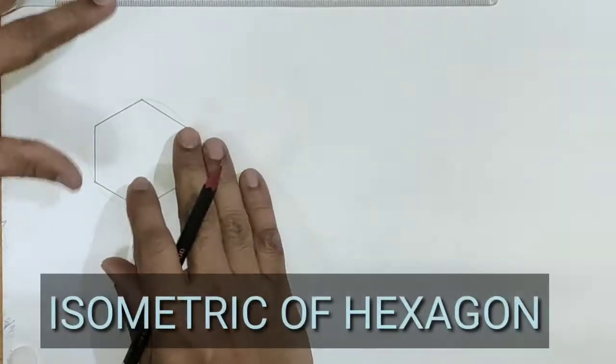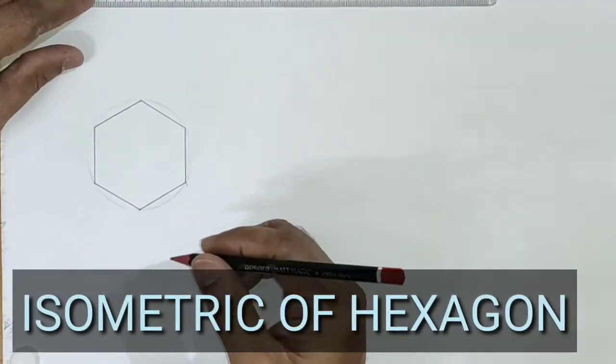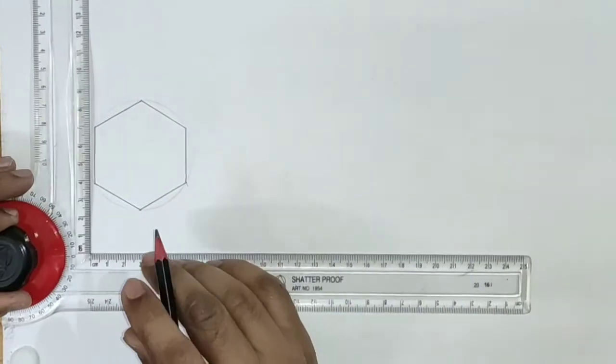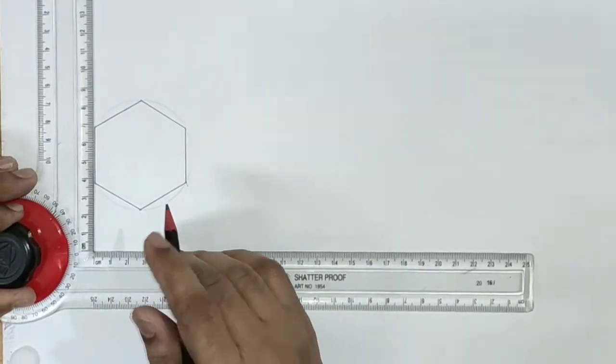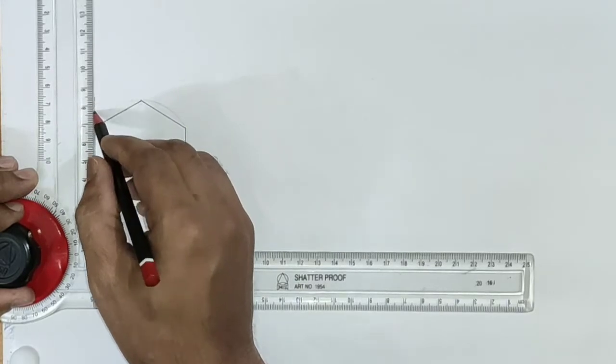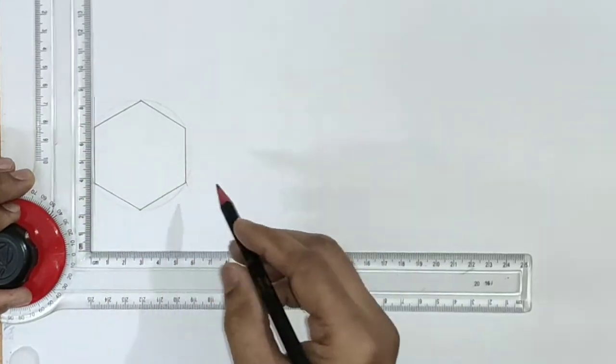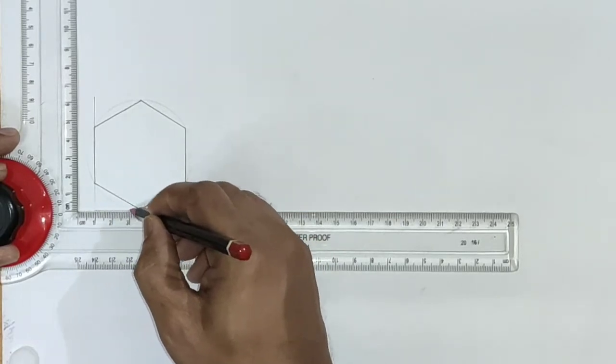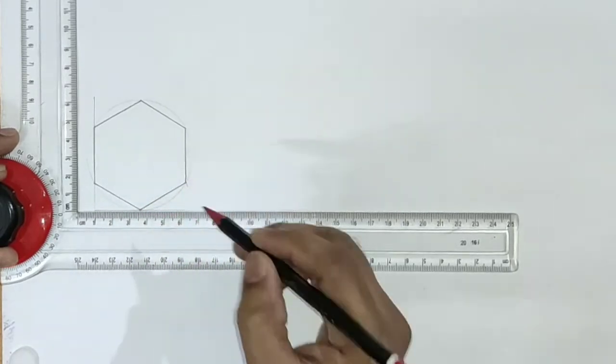Now let us draw isometric of hexagon in different planes. First of all, draw the rectangle around this polygon. The sides of rectangle should touch all the vertices.